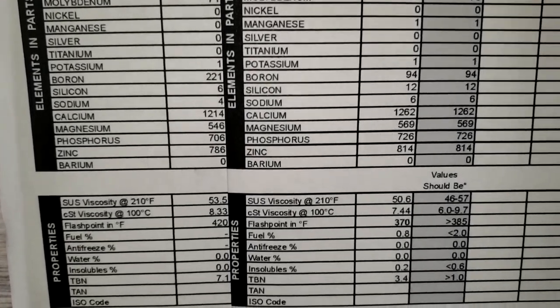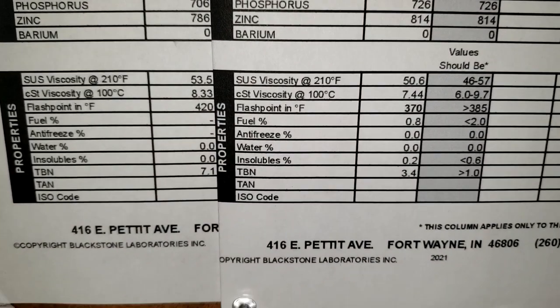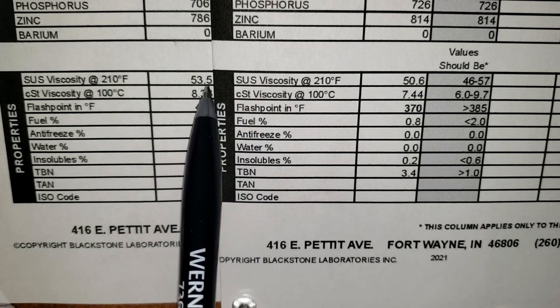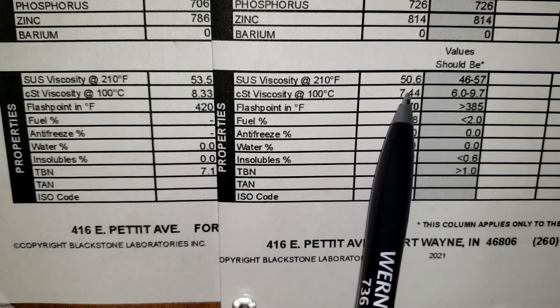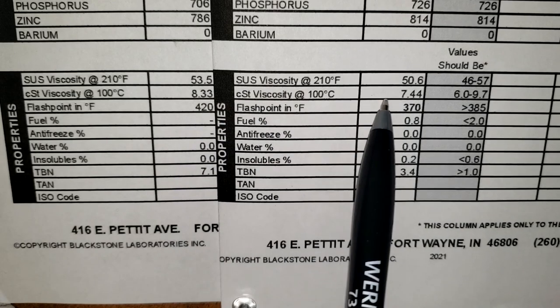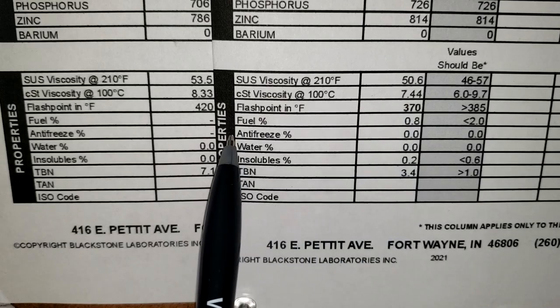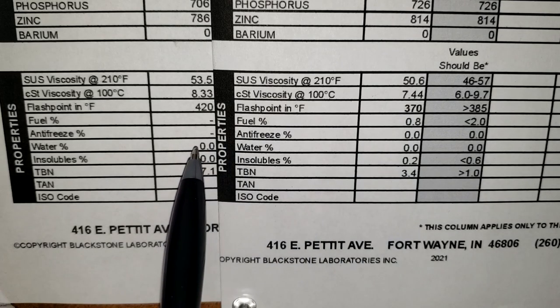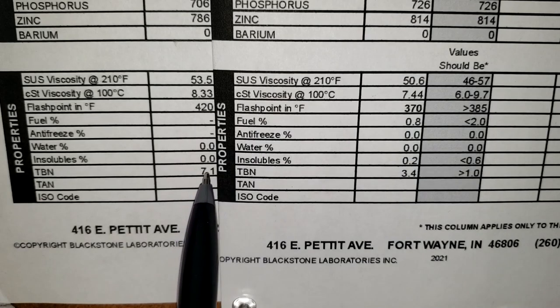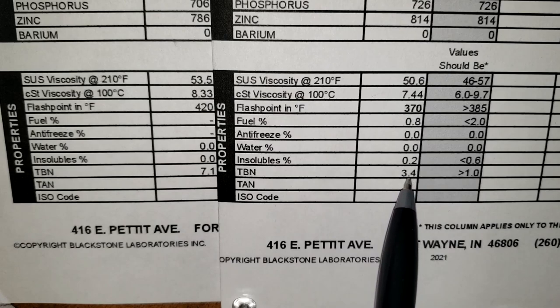Looking at the viscosities, you can see the oil got either sheared or diluted from the fuel. It started off at 53.5 and went to 50.6 — small numbers, not bad. At 100°C it went from 8.33 to 7.44. The virgin oil has higher flash point readings compared to the used sample, which confirms the fuel dilution. And the TBN started at 7.1 and ended up at 3.4.